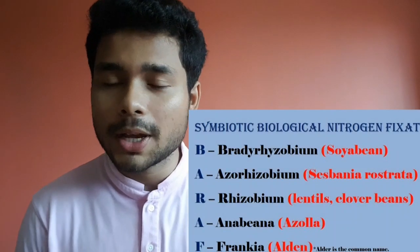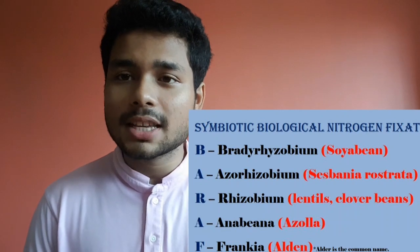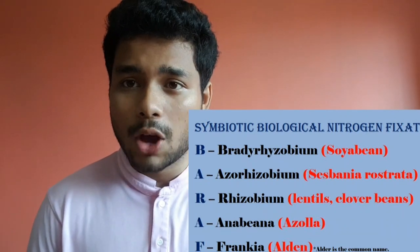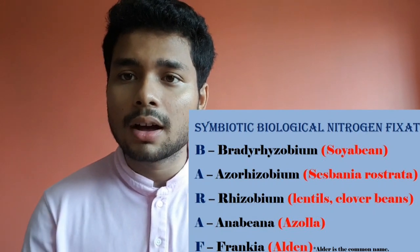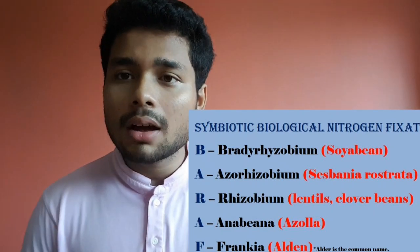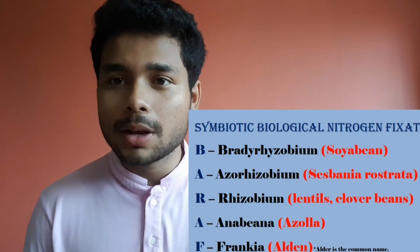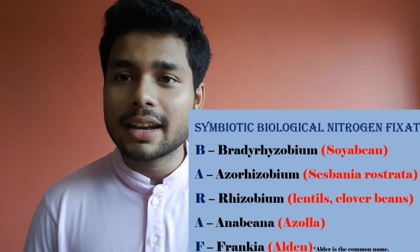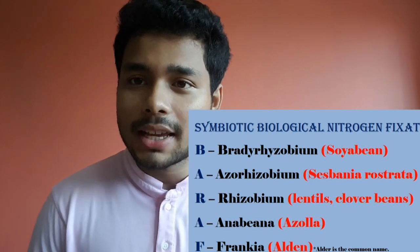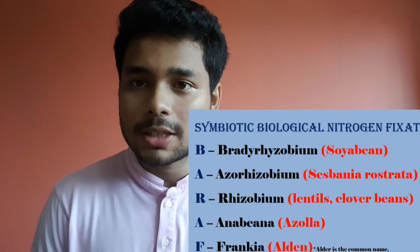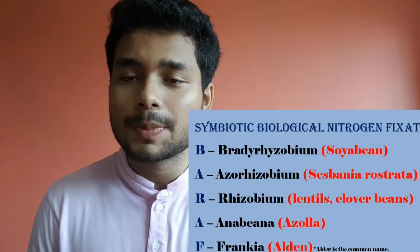The last trick helps remember the symbiotic nitrogen-fixing bacteria — the mnemonic BARAF: B for Bradyrhizobium (symbiosis with soyabeans), A for Azorhizobium (symbiosis with Sesbania rostrata), R for Rhizobium (symbiosis with leguminous plants), A for Anabaena (symbiosis with Azolla, the aquatic fern), and F for Frankia (symbiosis with non-leguminous plants like alder/Alnus trees).